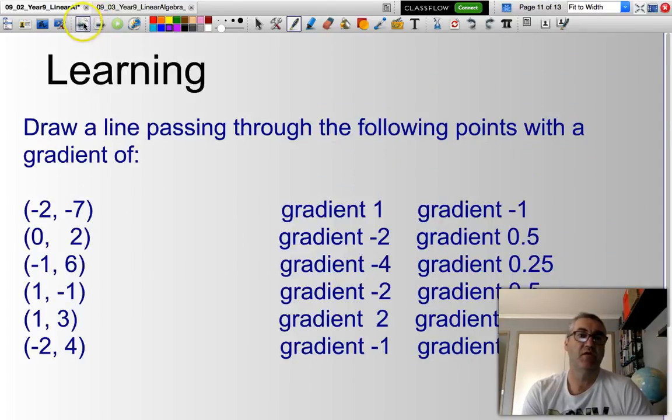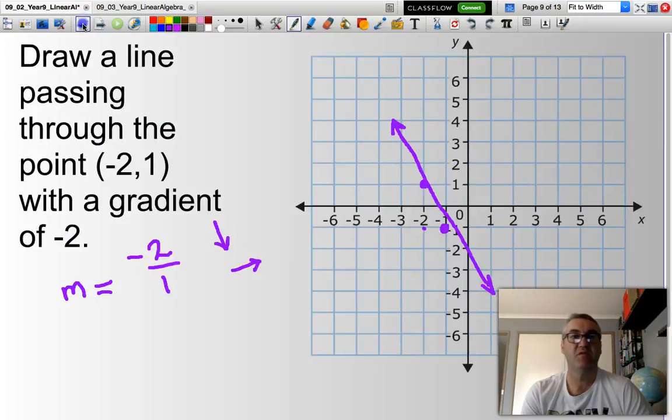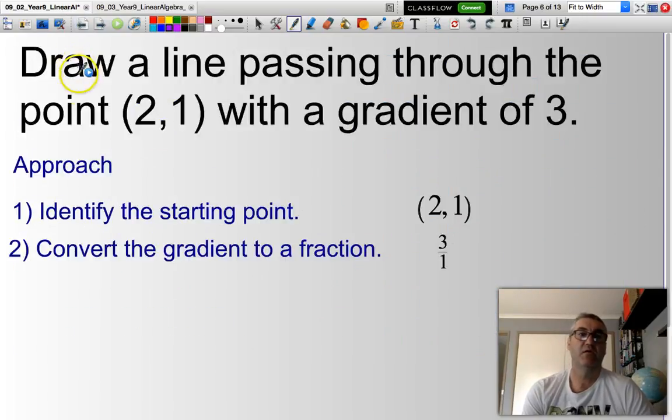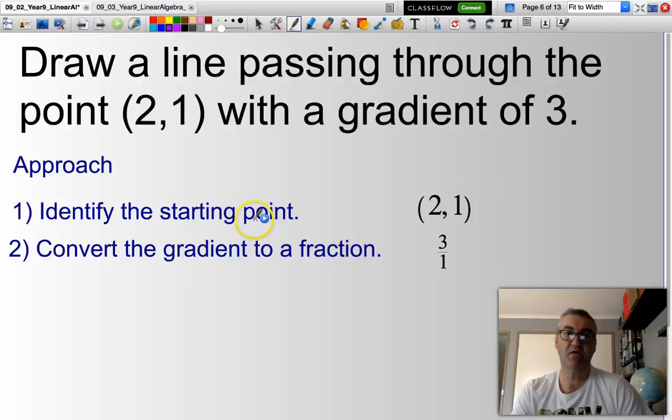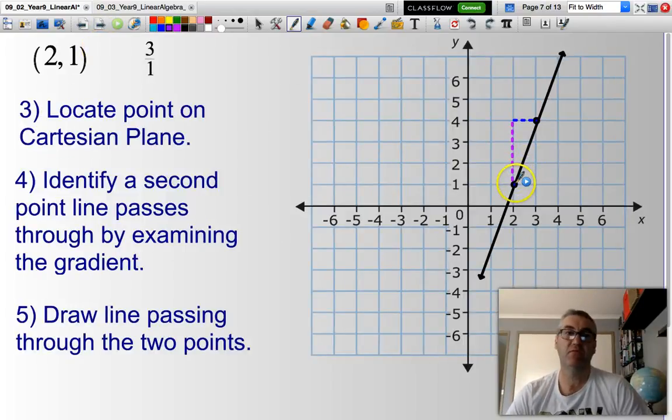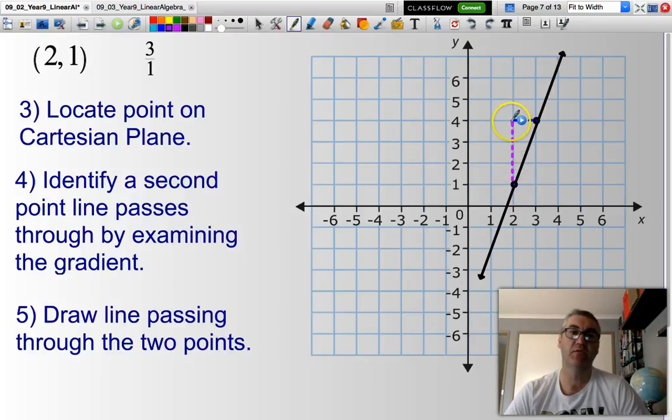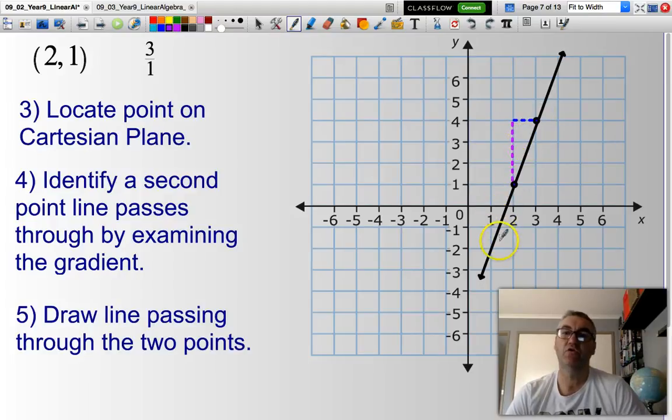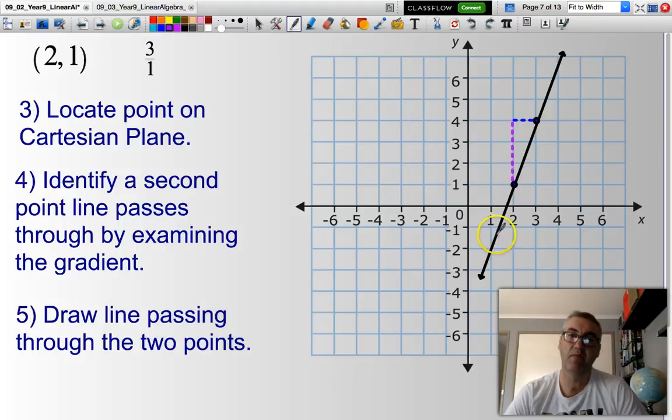So there you have it. To summarize, if I wish to draw a line that's passing through a specific point with a specific gradient, identify the starting point. Convert the gradient to a fraction. Then, from that fraction, well, you locate the starting point on your Cartesian plane. Then you work how many units I go up, how many units I go across. Pick a second point. Once you have that second point, use a ruler. Obviously, I didn't use a ruler, but use a ruler to produce a line that goes through those two points. So until next time, good maths. Bye for now.